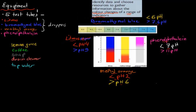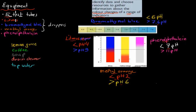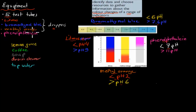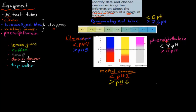For the experiment, the equipment is a very simple setup. You have at least 5 test tubes in a test tube rack. You would also have your droppers containing your different indicators — litmus, bromothymol blue, methyl orange, and phenolphthalein. Then you would also have your substances: lemon juice, coffee, soap, drain cleaner, and tap water. These are the ones we're going to use in this video, though you might have covered different ones in your experiment, as they all have a different range of pHs.